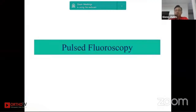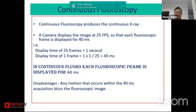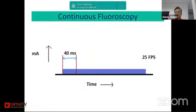Conventionally, fluoroscopy is in the continuous mode. The camera display is usually 25 frames per second, so each fluoroscopy frame is displayed for 40 milliseconds. In one second there are 25 frames, so the display time for one frame is 40 milliseconds. The disadvantage of continuous fluoroscopy is that any movement will cause the image to get blurred.